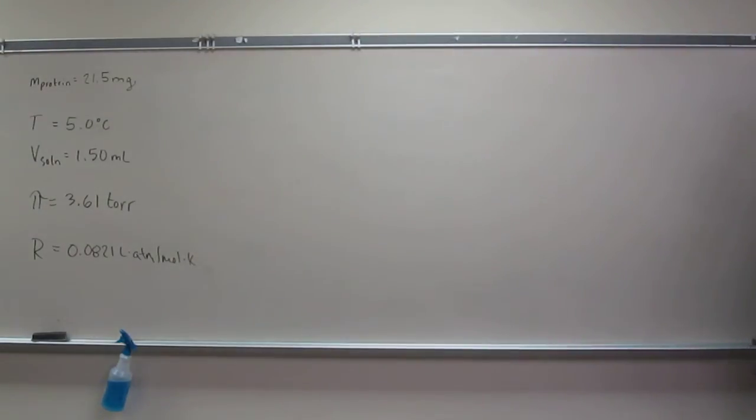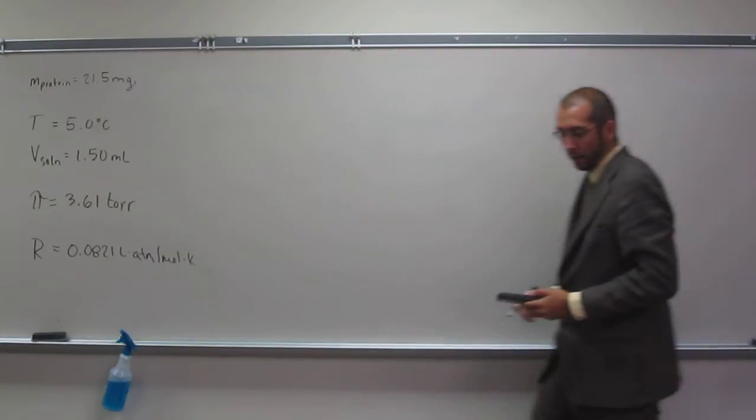A physician studying a variety associated with a fatal disease first finds its molar mass. She dissolves 21.5 mg of the protein in water at 5 degrees Celsius to make 1.50 mLs of solution and measures an osmotic pressure of 3.61 torr. What's the molar mass of this protein?